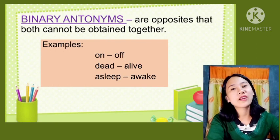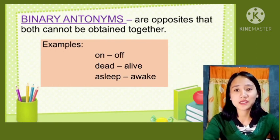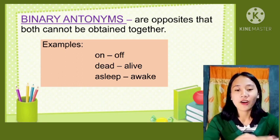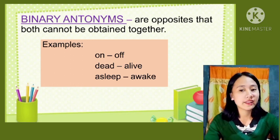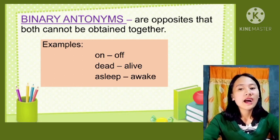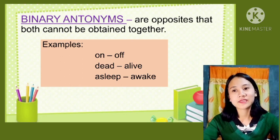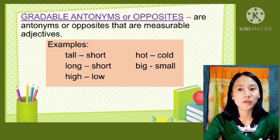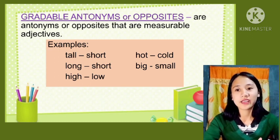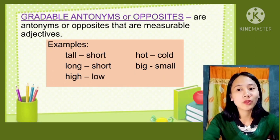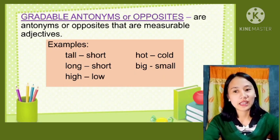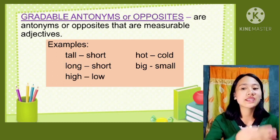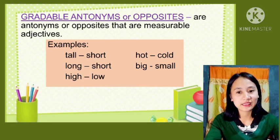Binary antonyms are opposites that both cannot be obtained together. For example: on and off, dead and alive, asleep and awake. The second type is gradable antonyms or opposites — these are antonyms that are measurable adjectives. For example: tall and short, long and short, high and low, hot and cold, and big and small.